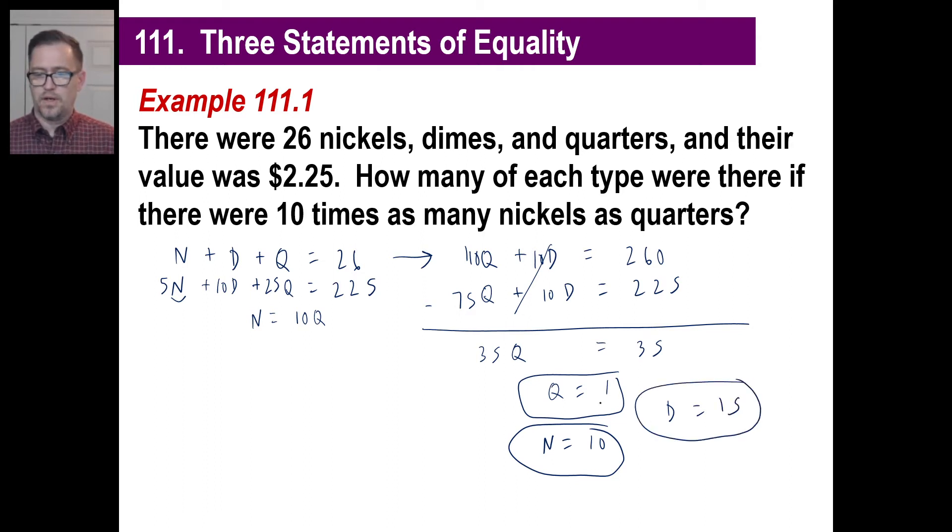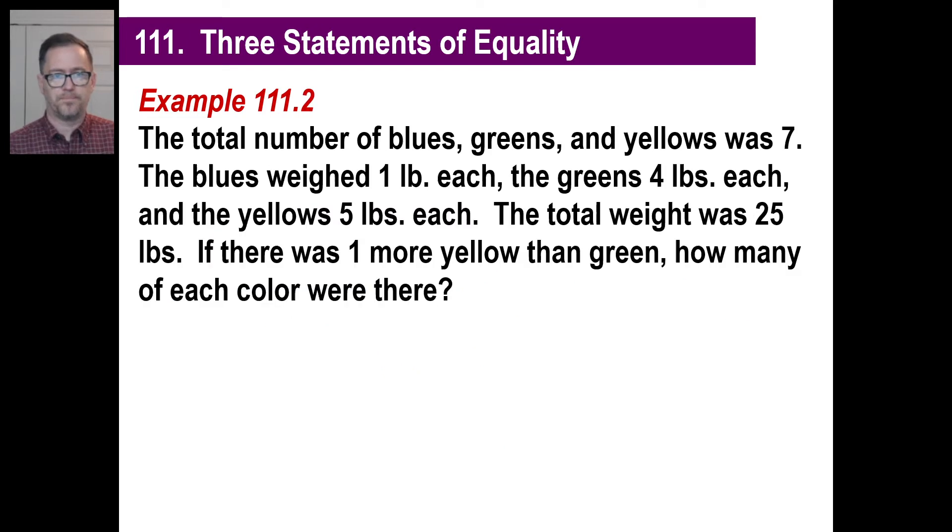We have 10 times as many nickels as quarters, so nickel is 10. And the number of dimes must be, since there are 26 total, we have 11 here, so the dimes must be 15. Let's just check this to make sure. We got one quarter, that's 25 cents. We got 10 nickels, that's 50 cents. We got 15 dimes, that's $1.50. 50 and 50 gives you $2 plus 25, equals 2.25, there it is.